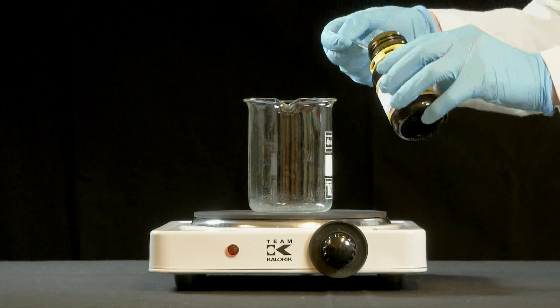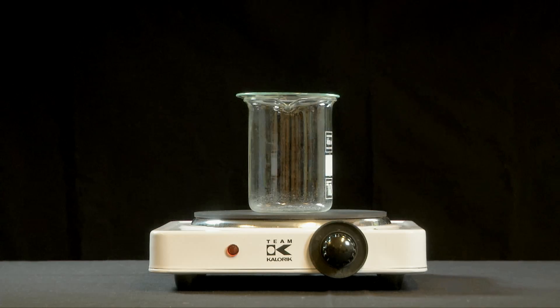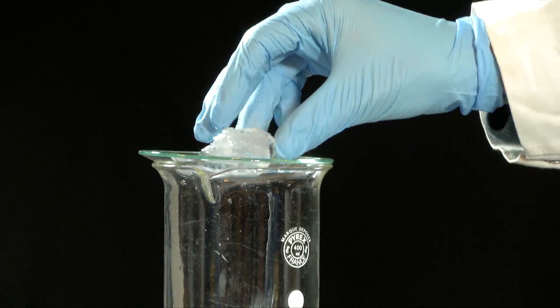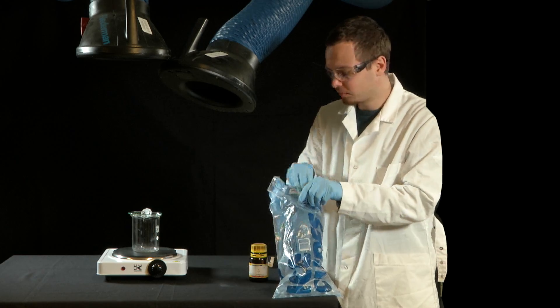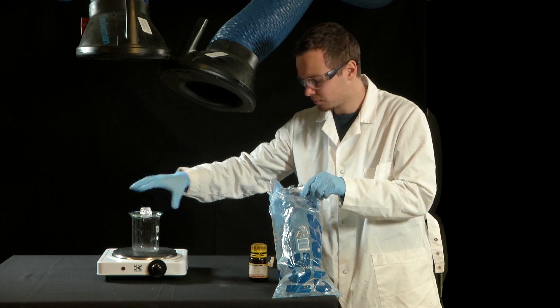We put just a few teaspoons of solid iodine into the beaker. The watch glass then goes on top of the beaker and we place some ice cubes onto the watch glass in order to keep it cold.